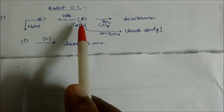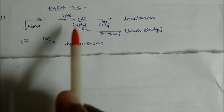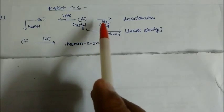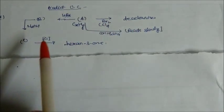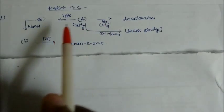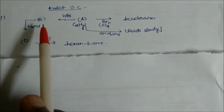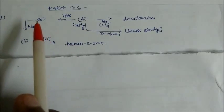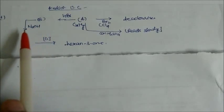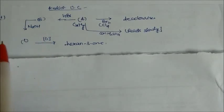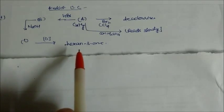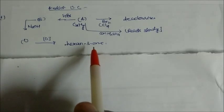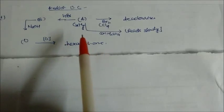Here we have a hydrocarbon A. On reaction with Br₂/CCl₄ it decolorizes, and in presence of HBr it converts into B. From B, in presence of sodium hydroxide it converts into C, and from C on oxidation it changes into hexan-3-one — so this is one ketone group.